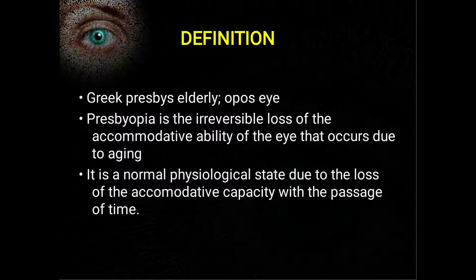Hello friends, in this short lecture we discuss a very universal and common condition of the eye called presbyopia. Friends, remember presbyopia is not a refractive error — it's not pathological. It's a very physiological thing which occurs to everybody after the age of 40.